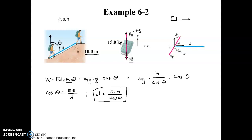And then we can substitute that into this equation, which now becomes mg times 10.0 over cosine of theta times cosine of theta. And look what happens here, the cosine of thetas cancel out.